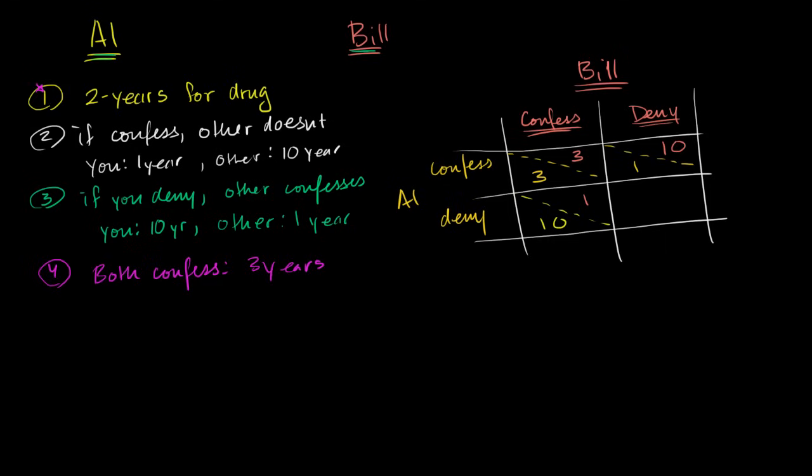And then if they both deny, they're in scenario one where they're both just going to get their time for the drug dealing. So Al will get two years and Bill will get two years.